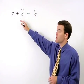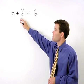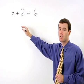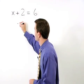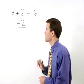So if we take a look at the left side of our equation, a 2 is being added to x. So in order to get x by itself, we must subtract 2 from the left side of the equation.